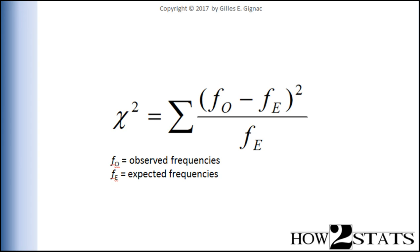The formula is based ultimately on the difference between the observed frequencies and the expected frequencies. That's going to be true whether you're doing a basic Pearson chi-square analysis, like testing the difference between the observed proportions that were correct in a taste testing trial versus the expectation under the null hypothesis.